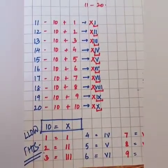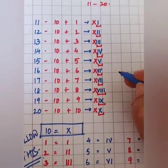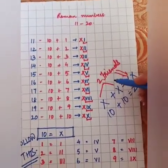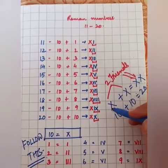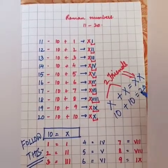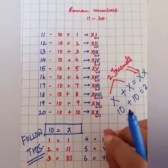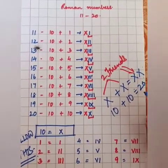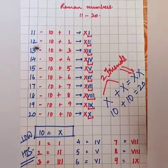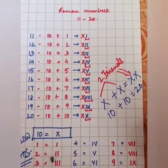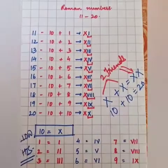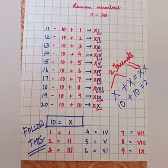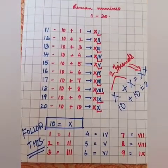I hope this is clear. To remember: when two friends — one X meets another X — they make double X, that is 20. Isn't it interesting? I hope you are now clear with this. Bye for now.